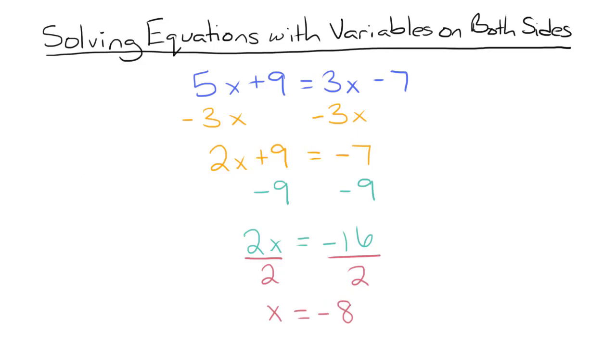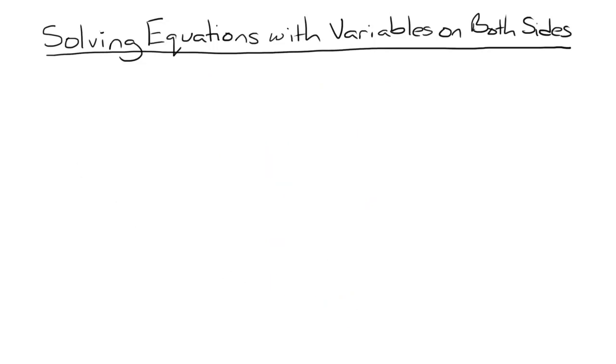Let's take a look at another problem. Negative 2x plus 13 equals 6x minus 31.